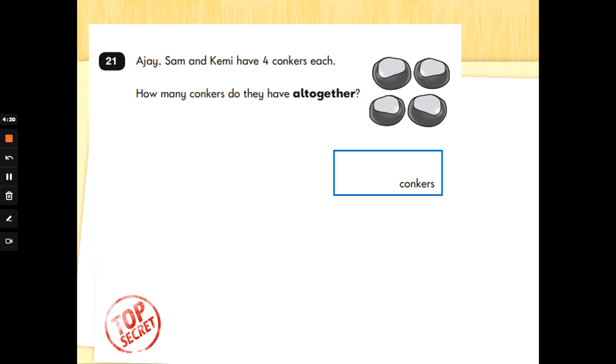Number 21. AJ, Sam and Kemi have 4 conkers each. How many conkers do they have all together? And all together wants us to add. Whenever we see all together, that is asking us to add. So we've got AJ has got 4. Sam's got 4. So 4 add 4. Kemi has another 4, add 4. We need to do 4 add 4 add 4. Now we know how to add 3 numbers.